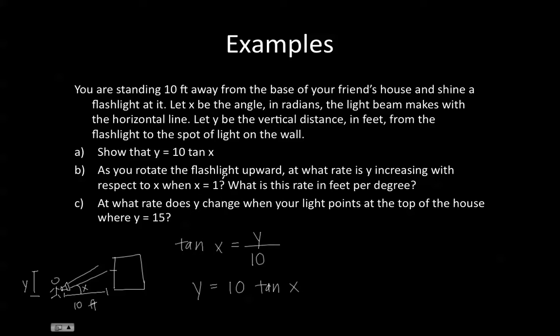As you rotate the flashlight upward, at what rate is Y increasing with respect to X when X equals 1? Well, that looks like they're asking us to find the derivative of Y. So the derivative of Y equals 10 times the derivative of tan X, which is equal to secant squared X.